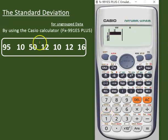Then you'll add the values to the calculator carefully: 95, 10, 50, 12, 10, 12, and 16.